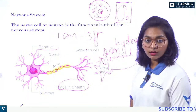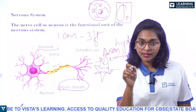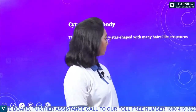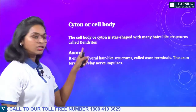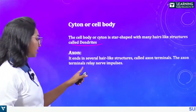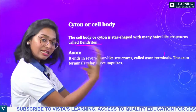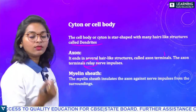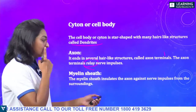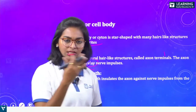The myelin sheath insulates the axon against nerve impulses from surrounding nerves, because there are too many nerves and electrical impulses passing through — so insulation prevents cross-charging. The cell body (cyton) is star-shaped with hair-like dendrites. The axon has axon terminals at the end. The terminals relay nerve impulses to the next neuron.